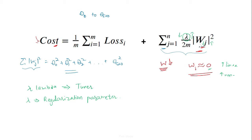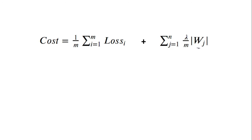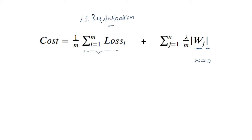Instead of w squared, we can take the modulus of w, and that will also work because eventually we want the value of w to be close to zero. If we use just the modulus of w and not the square, this is called L1 regularization. L2 regularization can be used for both logistic regression and linear regression — the only difference is the cost function. For linear regression we use the theta parameter, and for logistic regression we use the w parameter.